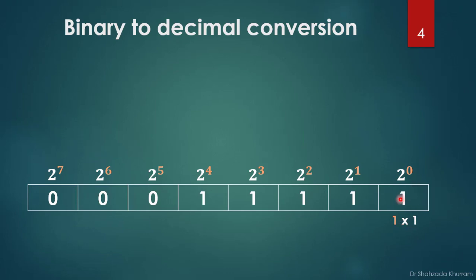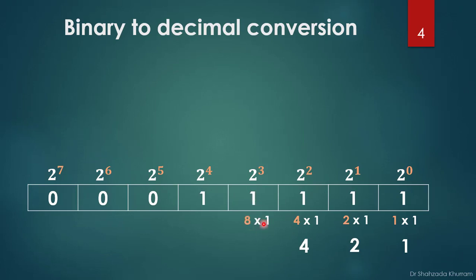2 raised to power 0 equals 1, multiplied by 1, equals 1. 2 raised to power 1 equals 2, multiplied by 1, equals 2. 2 raised to power 2 equals 4, multiplied by 1, equals 4. 2 raised to power 3 equals 8, multiplied by 1, equals 8. 2 raised to power 4 equals 16, multiplied by 1, equals 16.